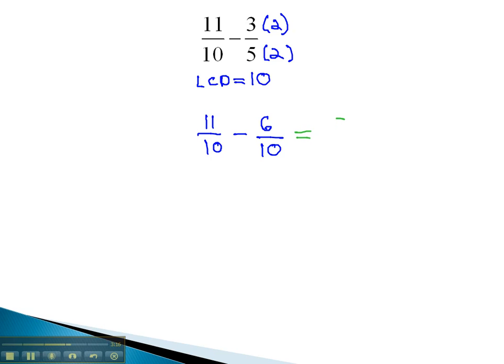In the numerators, 11 minus 6 is 5, and in the denominator, keeping the denominator, we have 10. We can reduce the fraction by dividing by 5 to get our solution of 1 half.